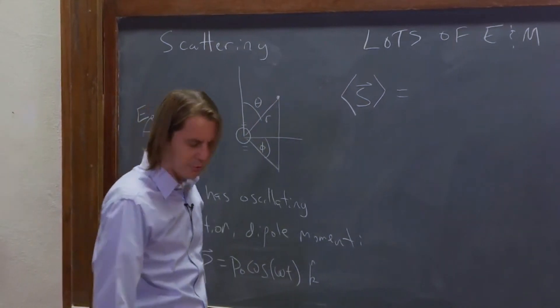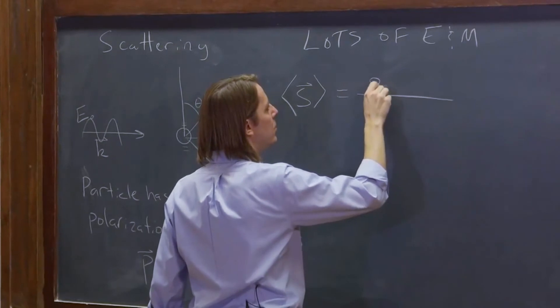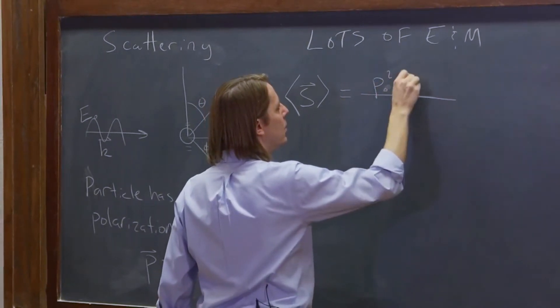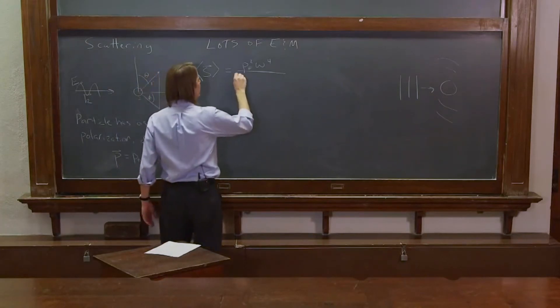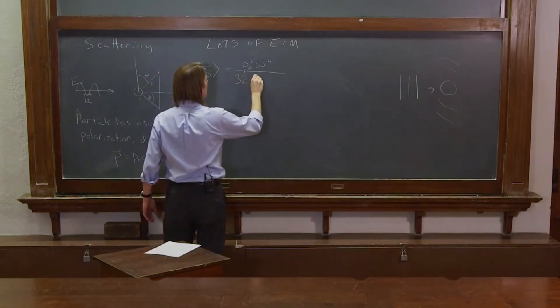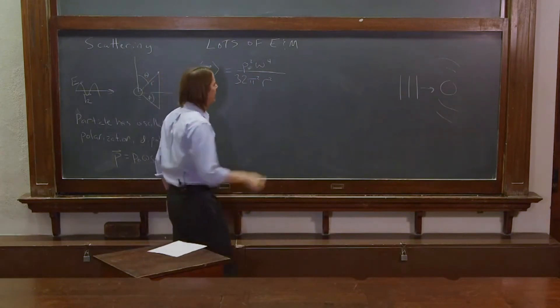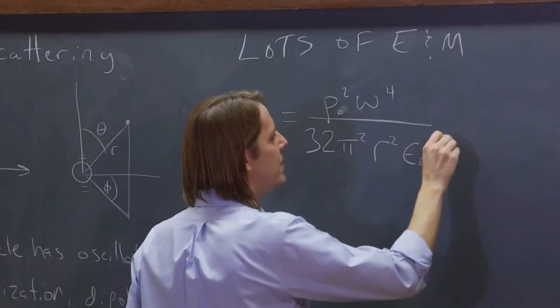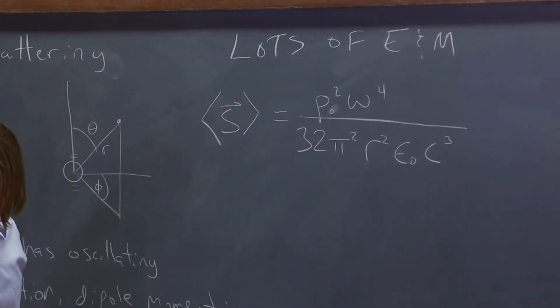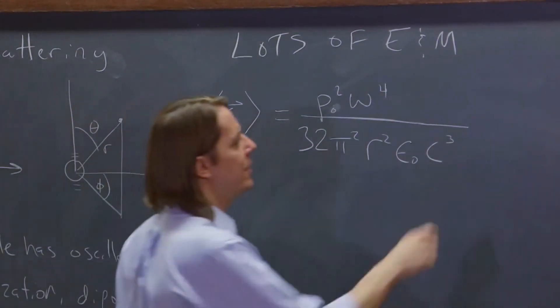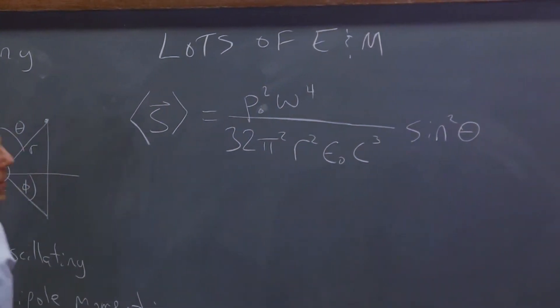And what does dipole radiation look like? So if you really did it, you would get that the Poynting vector looks something like this. It has a lot of terms. The dipole moment squared, omega to the fourth over 32 pi squared, r squared, epsilon naught, c cubed, the speed of light cubed. And then it's got a sine squared theta.